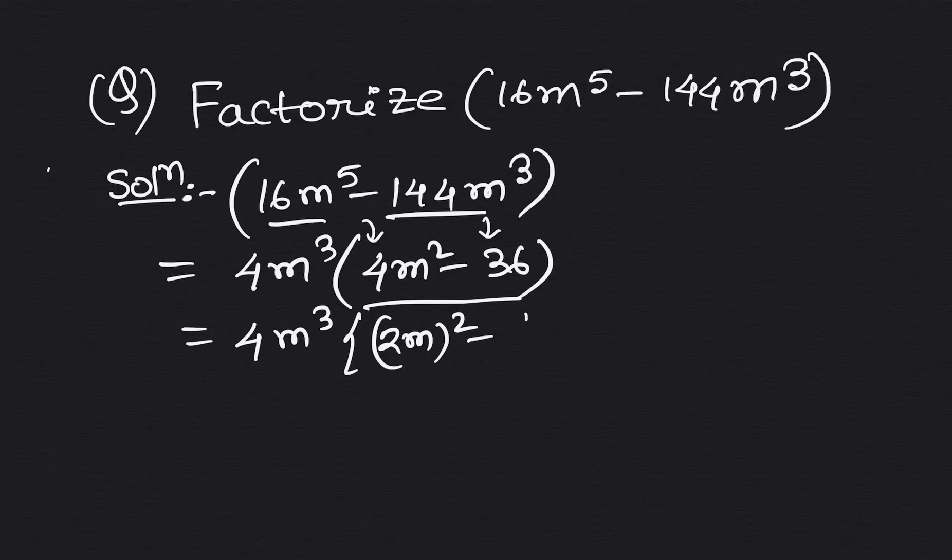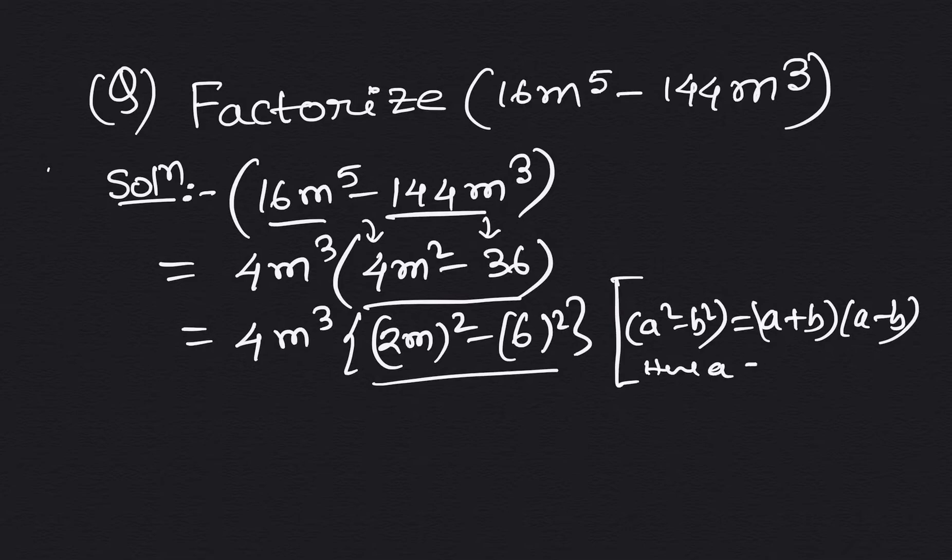Minus 6, we can write 6 to the power whole square. Now here we can apply the algebraic identity which is a square minus b square equals to a plus b into a minus b.